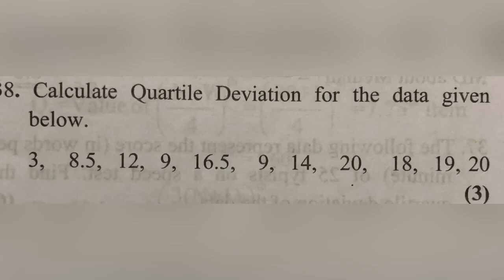Calculate the quartile deviation for the data given. We use Q1 and Q3, because QD equals Q3 minus Q1 divided by 2. Since raw data is not directly available, we use the grouped frequency approach to find quartile deviation.